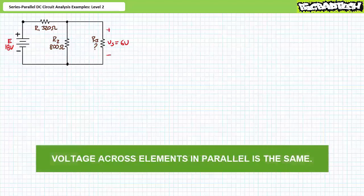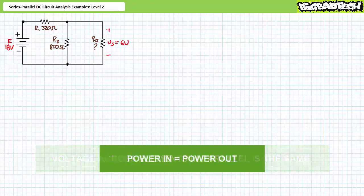Similarly, you will no doubt recall that voltage across elements in parallel is the same — this is the most fundamental parallel circuit property. Additionally, Kirchhoff's current law states that for any node, the summation of incoming currents equals the summation of outgoing currents. In short, what goes in must come out. Finally, power in always equals power out. We can use this fact to solve for other properties or to check our work.